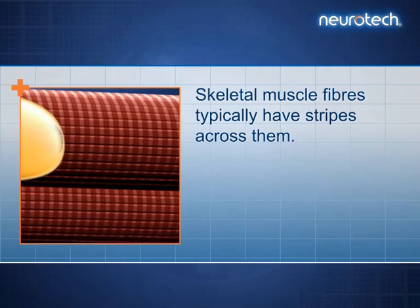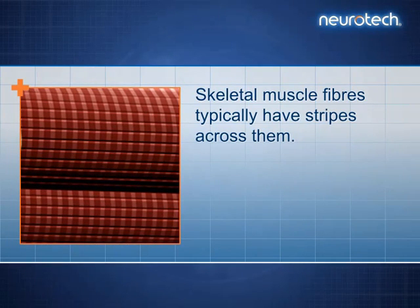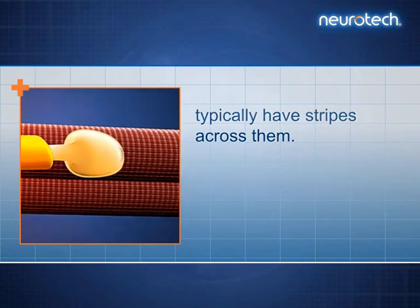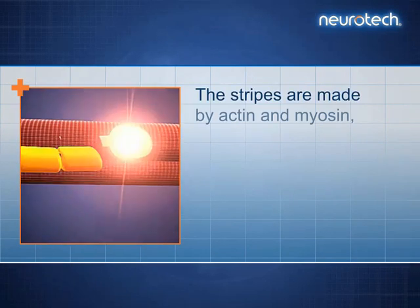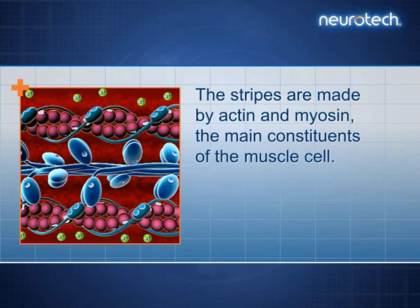Skeletal muscle fibres typically have stripes across them. The stripes are made by actin and myosin, the main constituents of the muscle cell.